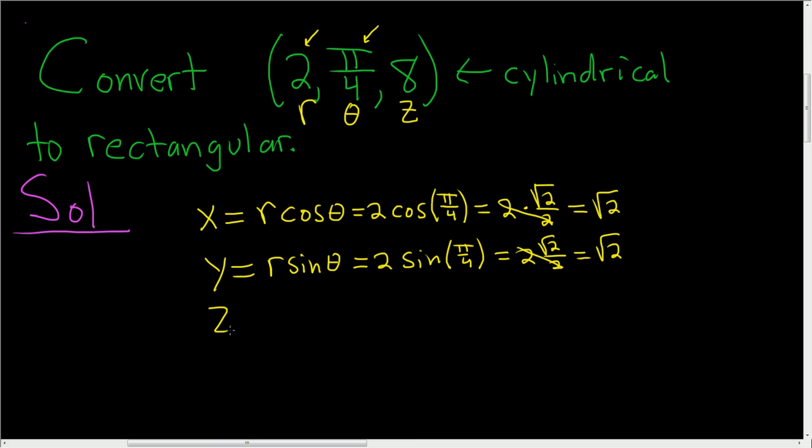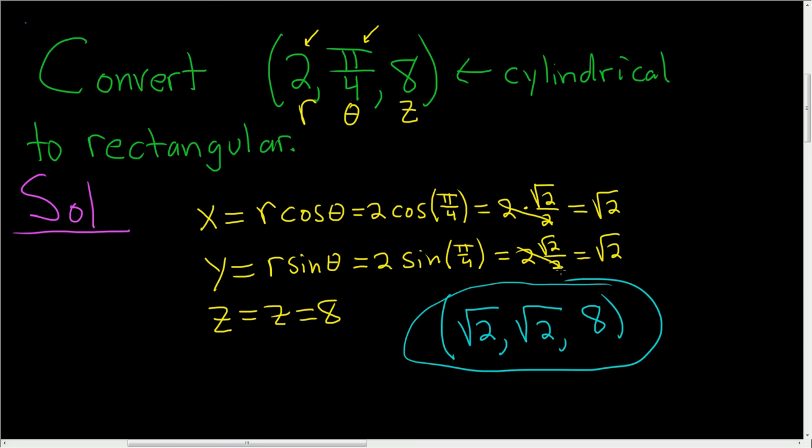And the best part is the last part: z equals z. We know that z is 8, so that's simply 8. The final answer is the ordered triple point in space (x, y, z), which is (√2, √2, 8). That's the final answer.